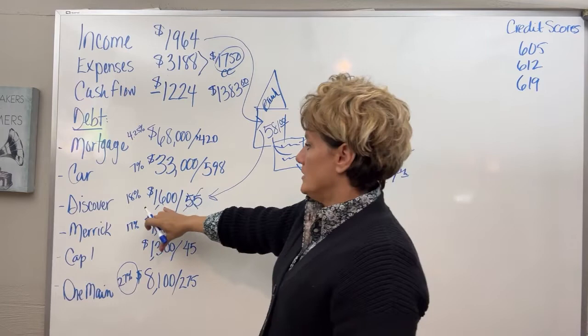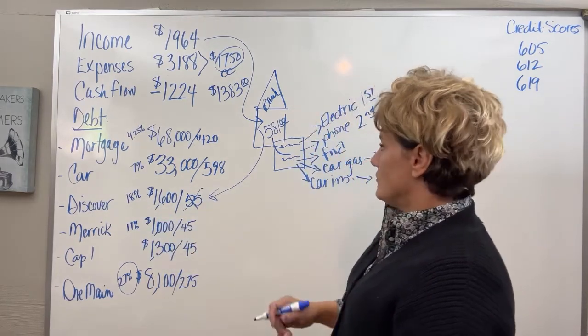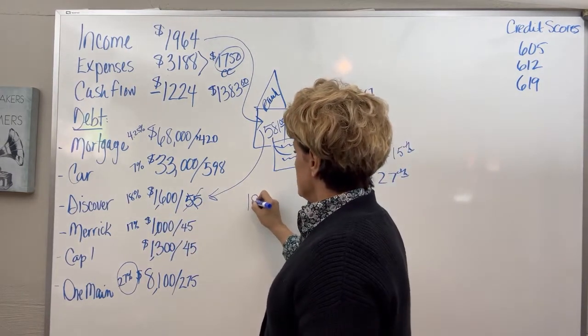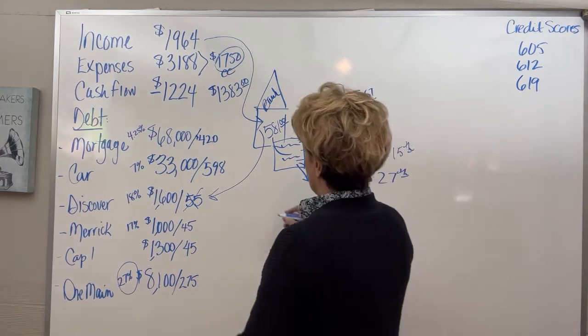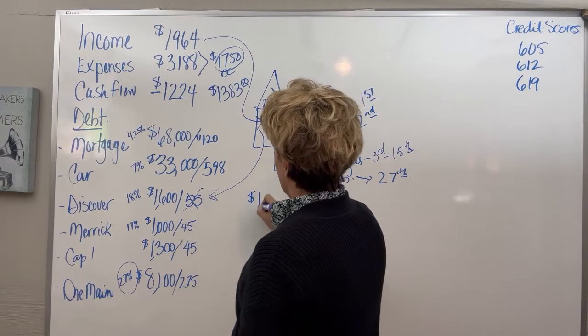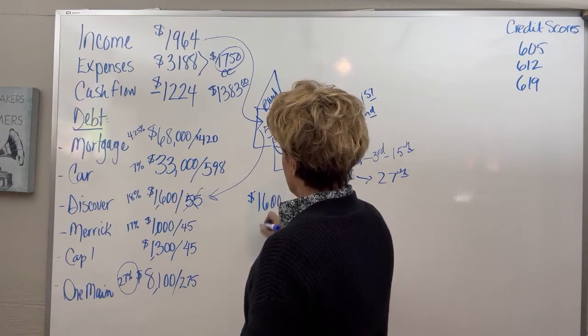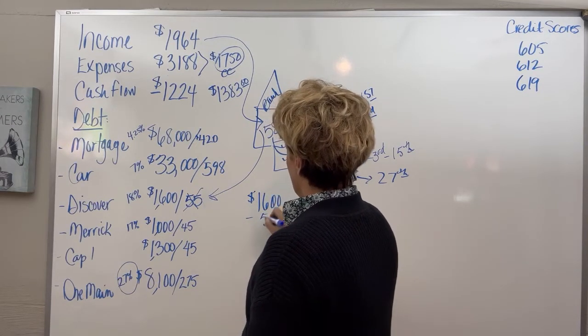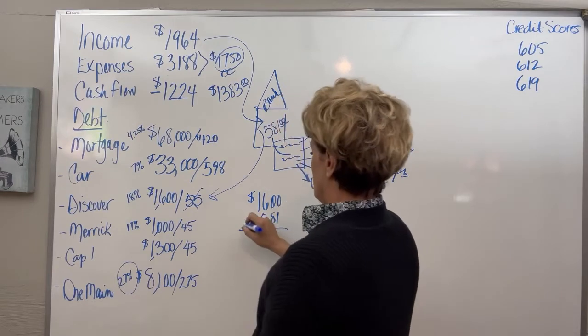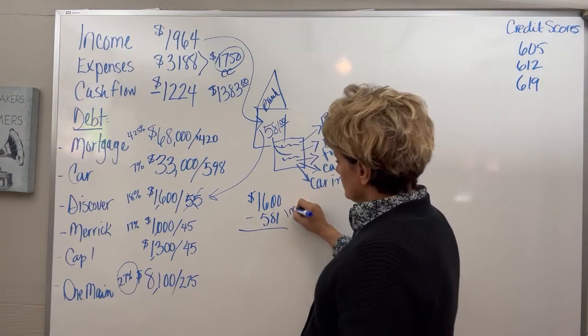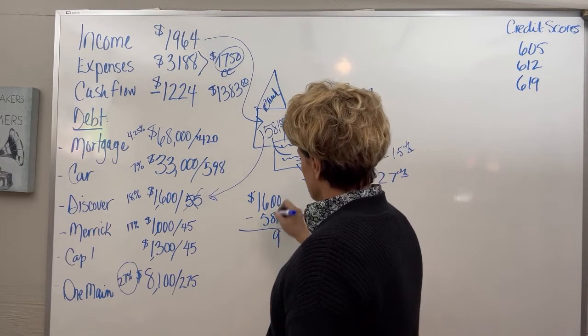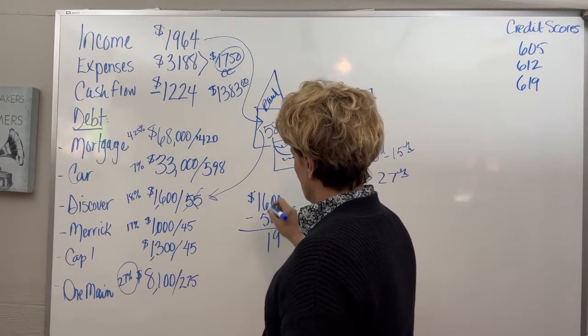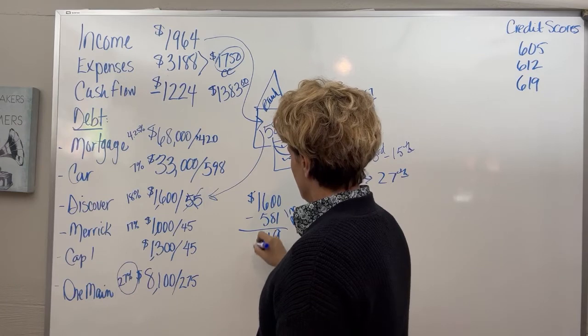And then it takes some of his living expenses, puts it down here. That only decreases his Discover card as well because if he's taken a $1,600 balance, and he's making an income deposit of $581, that will be his new Discover balance that he's paying 18% on.